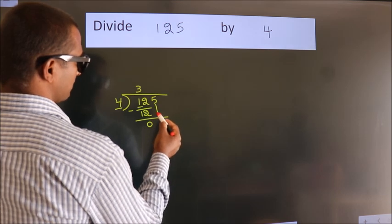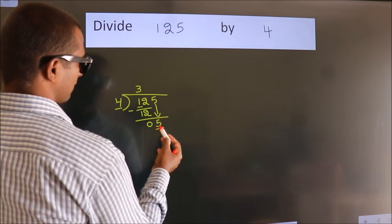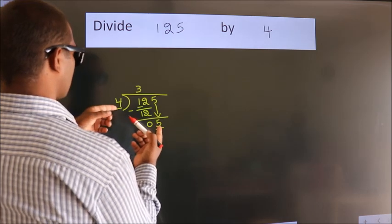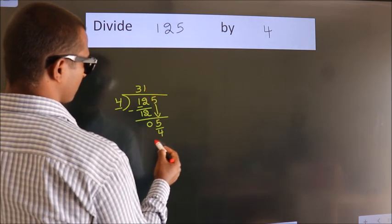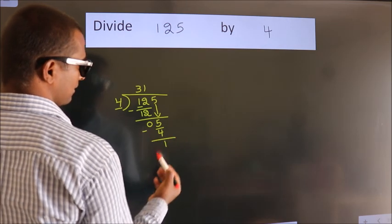After this, bring down the next number. So 5 down. A number close to 5 in the 4 table is 4 ones, 4. Now we should subtract. We get 1.